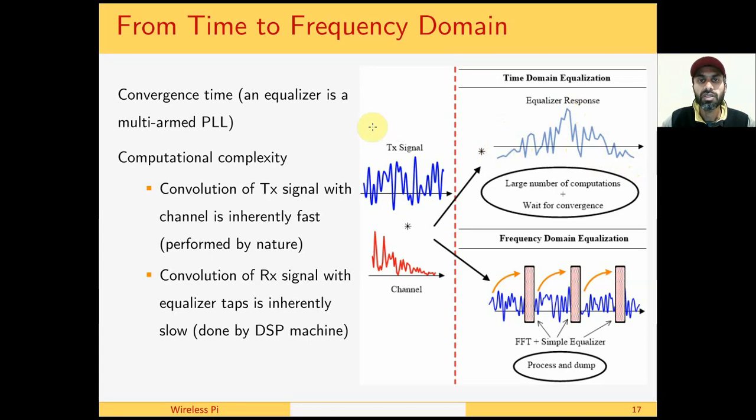Considering that many equalizers are implemented with filtering operations, we can think of the equalizer as a multi-armed phase-lock loop. Just like a phase-lock loop has a finite convergence time, an equalizer also has a convergence time before which the decisions are not reliable.